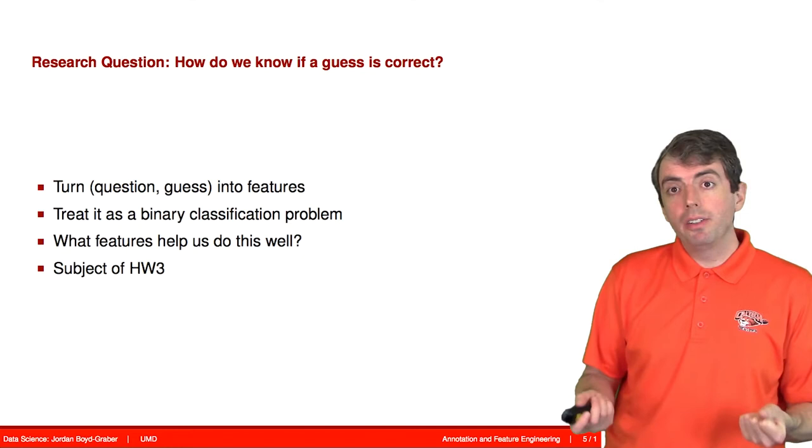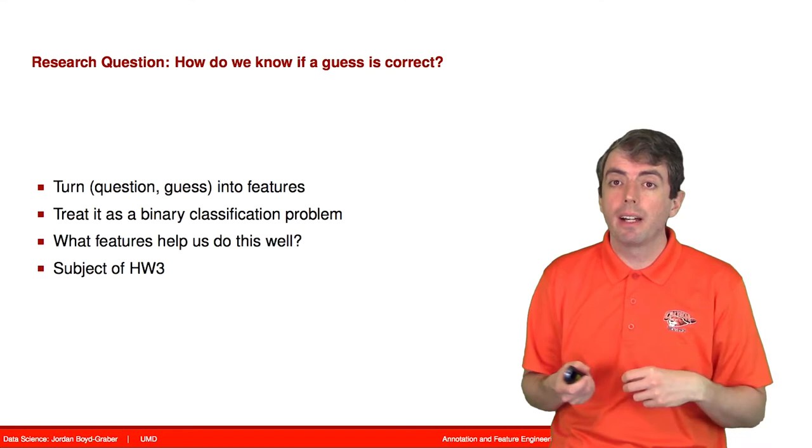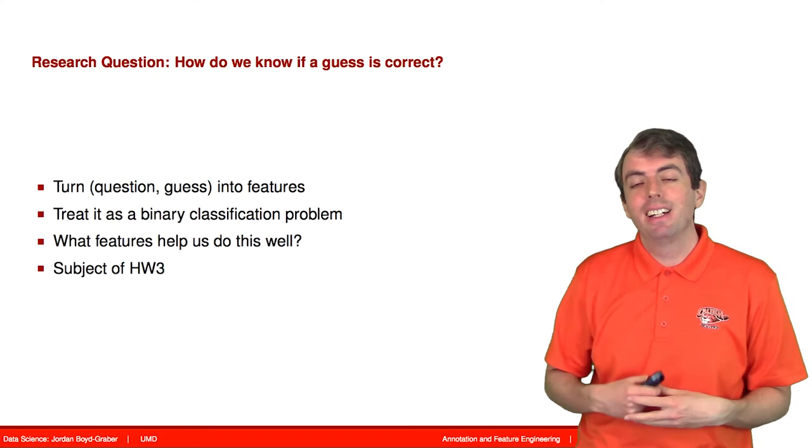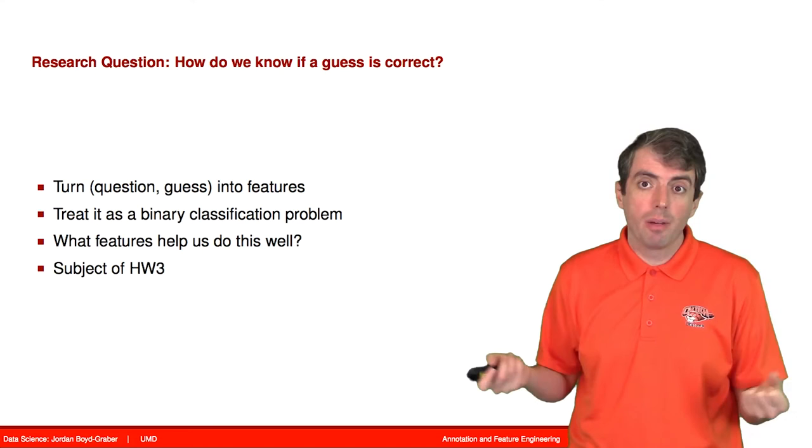So what we're going to do is we're going to take a bunch of guesses. And for each one, we're going to try to decide is this correct or not. And we'll iteratively build features that try to help us do this task better or not. And so this has been a feature engineering homework in my classes before, as well as determining the category of a question.